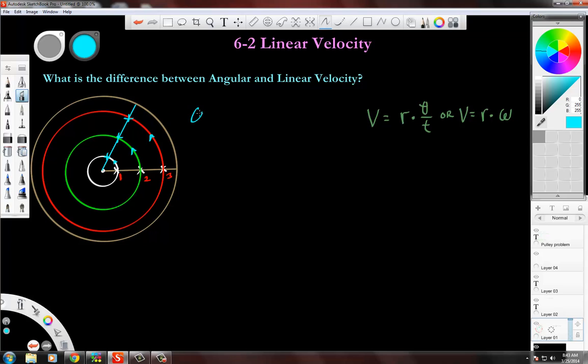So this omega, the angular velocity, would all be equal for one, two, and three. They're all equal. Horse riders one, two, and three all have the same angle. Let's say that was 60 degrees or maybe one radian or something like that. They would all be equal there.